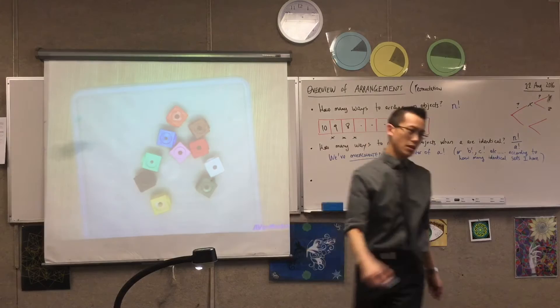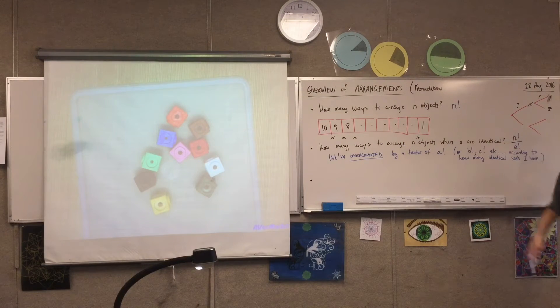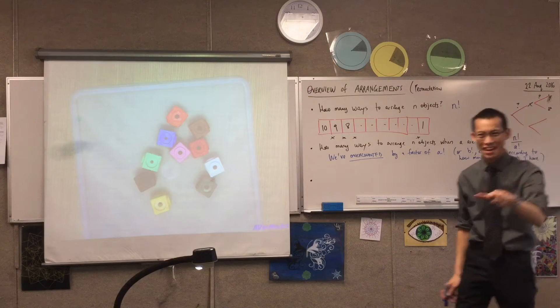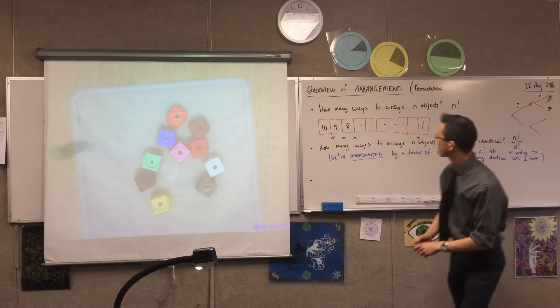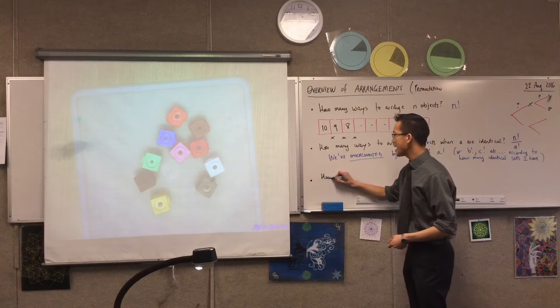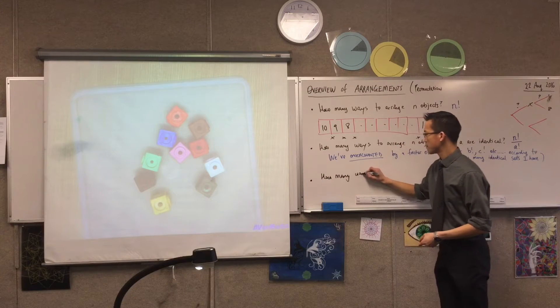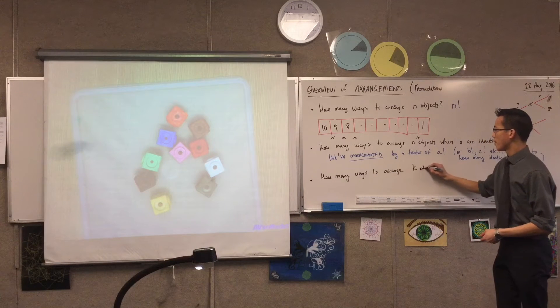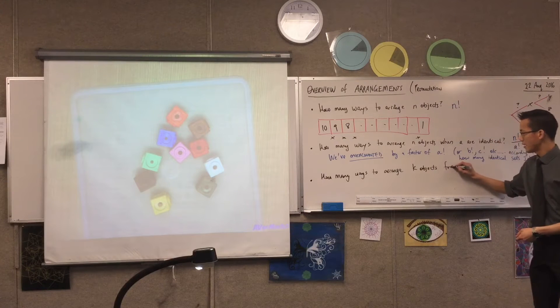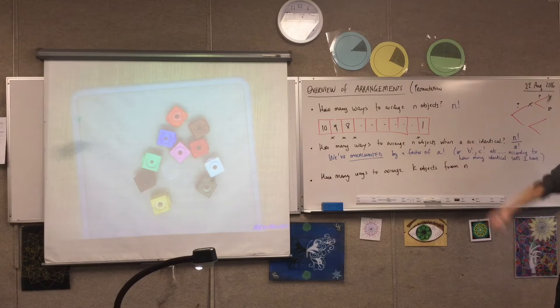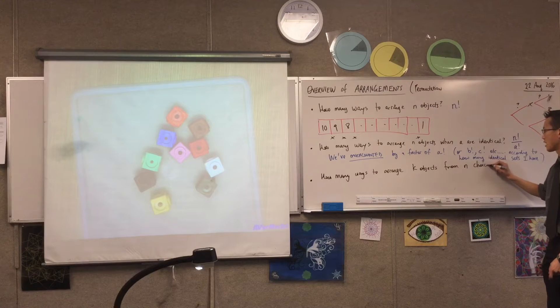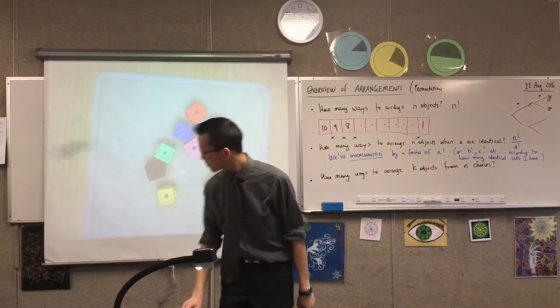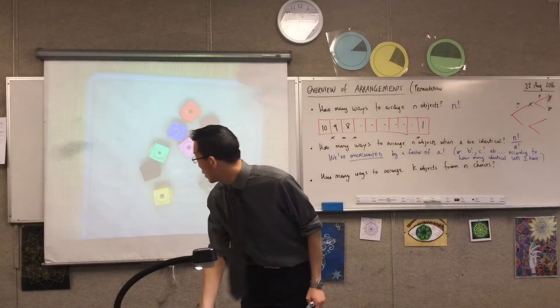Now what if I want to arrange, rather than out of the end objects, all of them, what if I only want to arrange some of them? And this is what I reserved K for. So the way I'm going to phrase this question is, how many ways are there to arrange K objects from N choices? So I've got my 10, this number, as my overarching thing, that's the number of things I can choose from, and then I only want K of them. Let's go with this original 10, let's pick 3 of them. Let's just make it nice and simple.